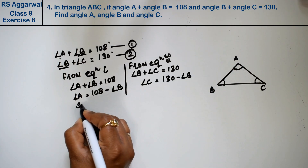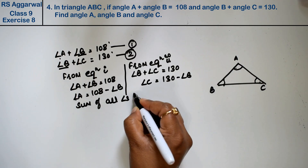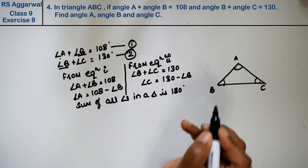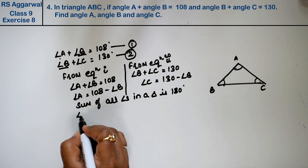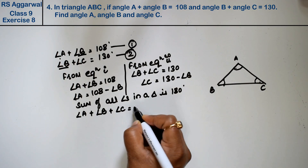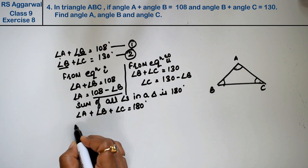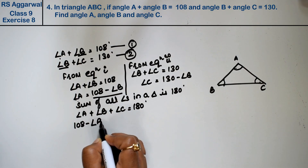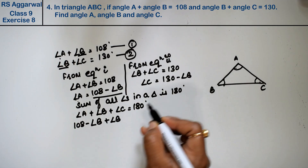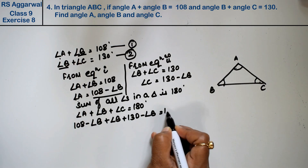We know that the sum of all angles in a triangle is 180 degrees. So angle A plus angle B plus angle C equals 180 degrees. Substituting: 108 minus angle B, plus angle B, plus 130 minus angle B equals 180 degrees.